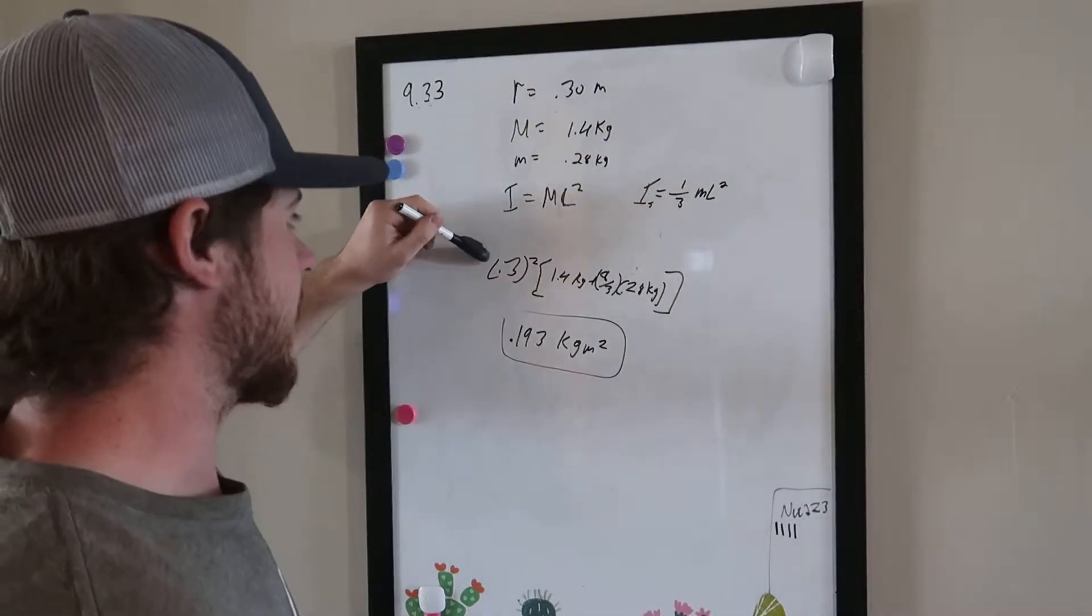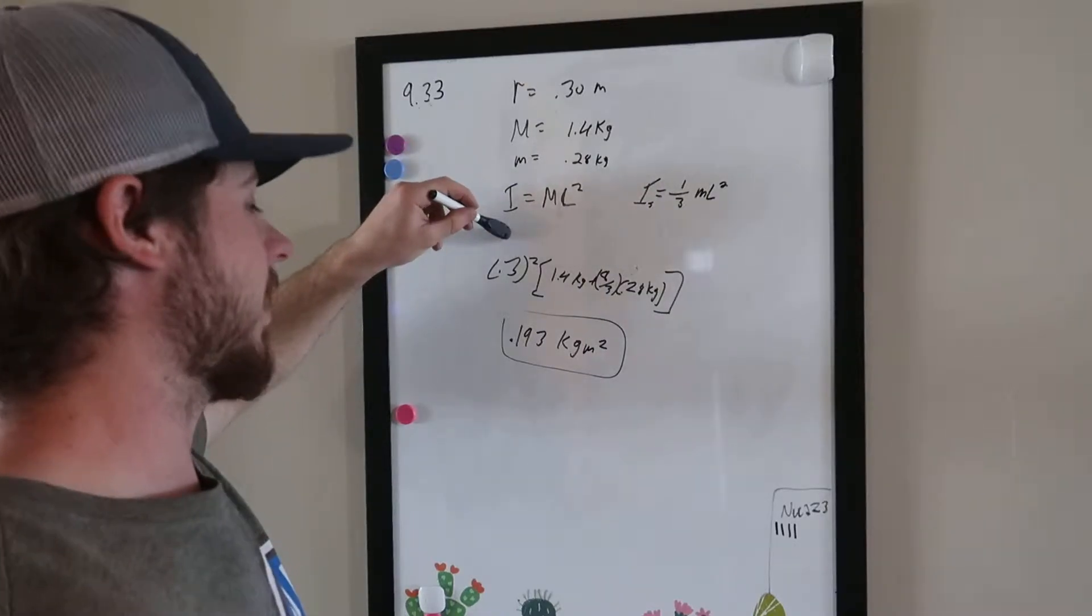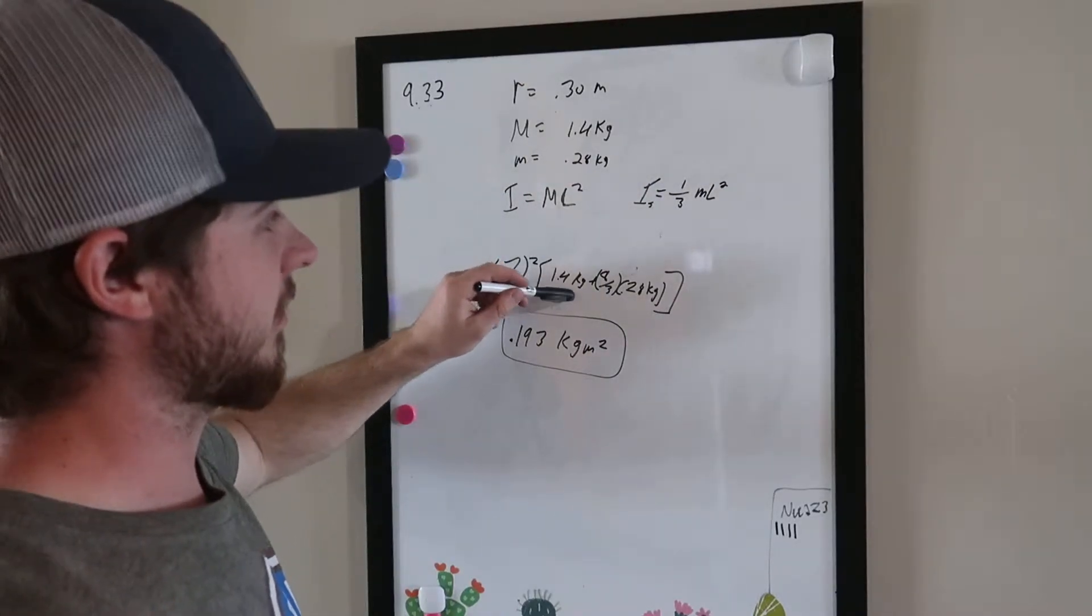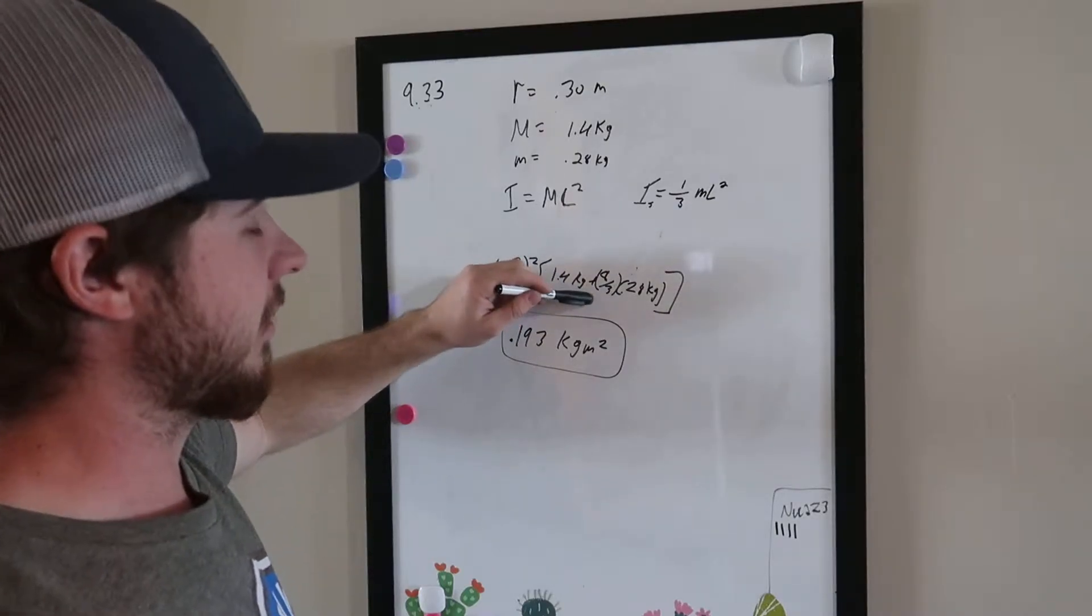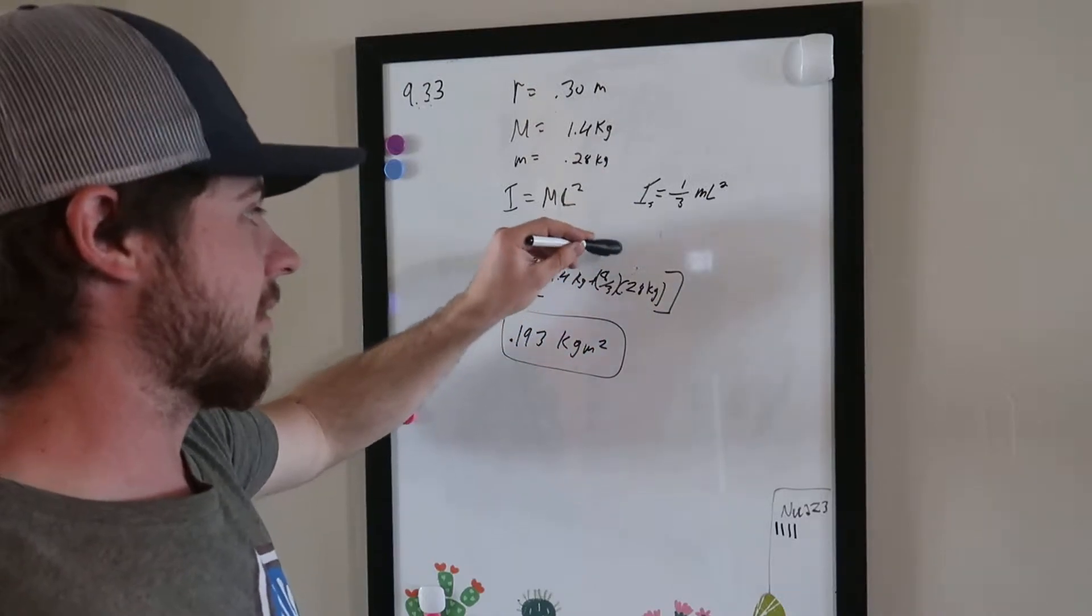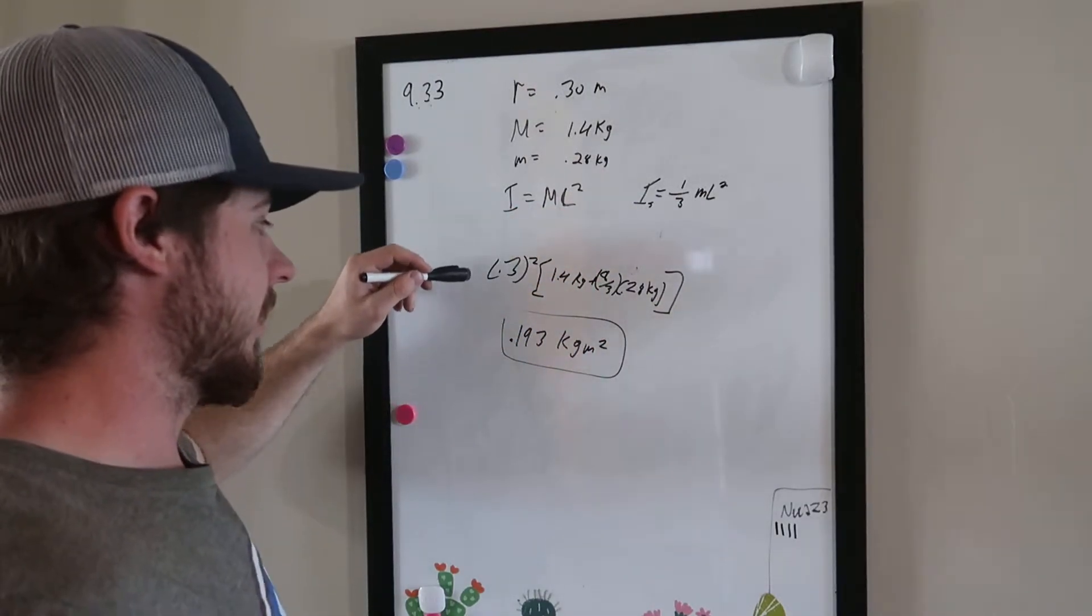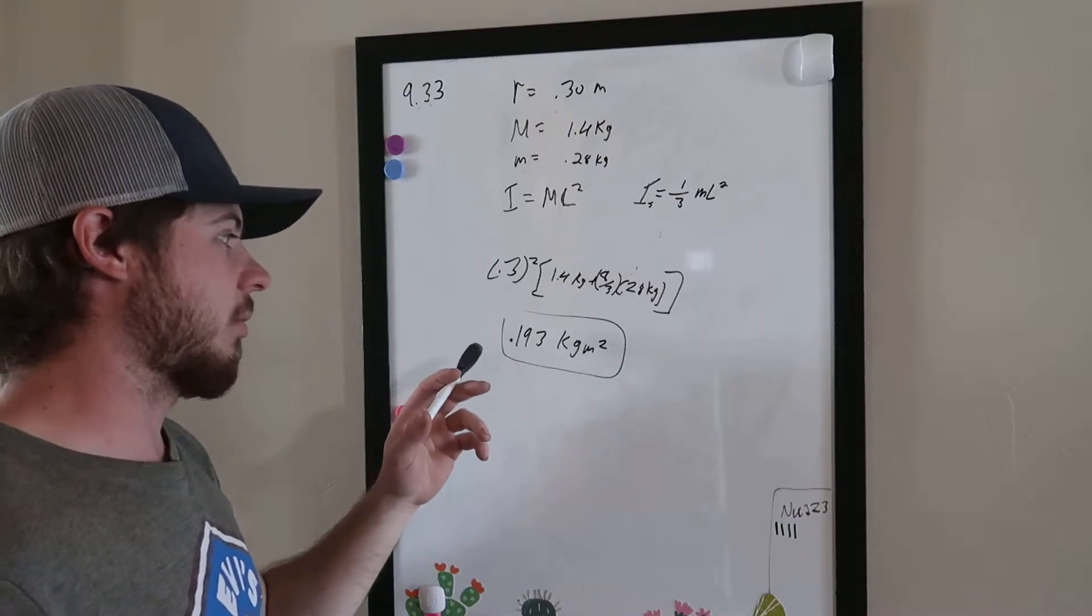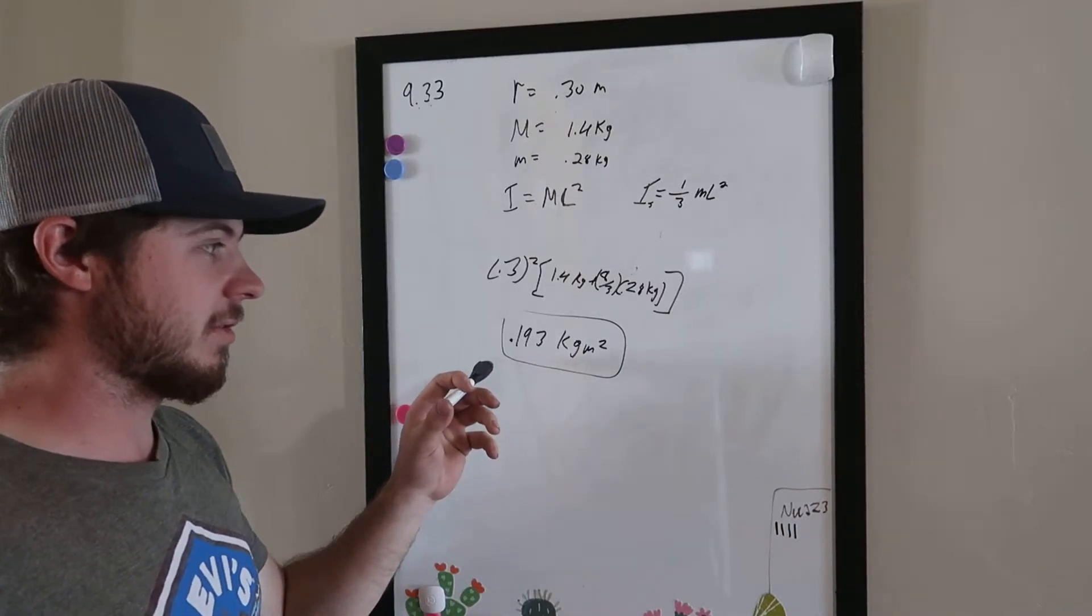We use this equation down here. So we did 0.3 squared multiplied by 1.4 kilograms, which is the mass of the whole thing, plus eight-thirds times 0.28 kilograms, the mass of the spoke. This gives us the moment of inertia, which ends up being 0.193 kilograms times meters squared.